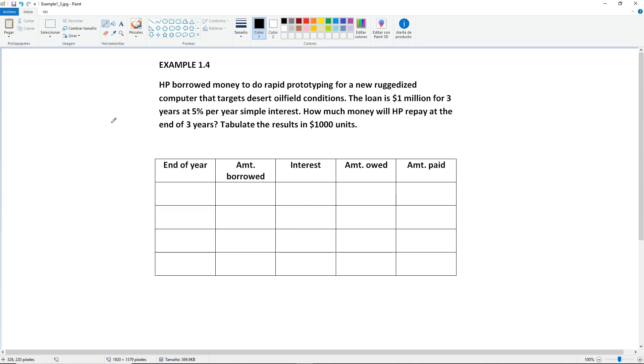First of all, it's just saying to tabulate it in $1,000 units for simplicity purposes. So here they're talking about millions but 1 million will be equal to 1,000. So basically we're just scratching out three zeros for simplicity purposes.